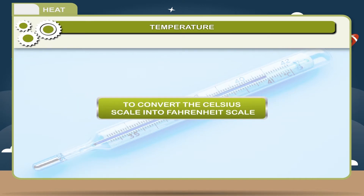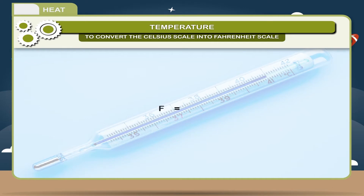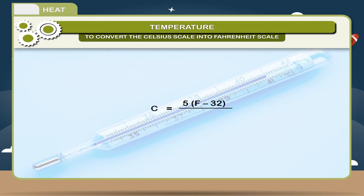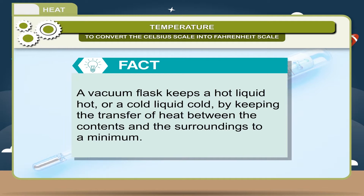To convert Celsius to Fahrenheit: F = (9C/5) + 32. To convert Fahrenheit to Celsius: C = 5(F - 32)/9. Celsius is equal to Kelvin minus 273. Fact: a vacuum flask keeps a hot liquid hot or a cold liquid cold by keeping the transfer of heat between the contents and the surroundings to a minimum.